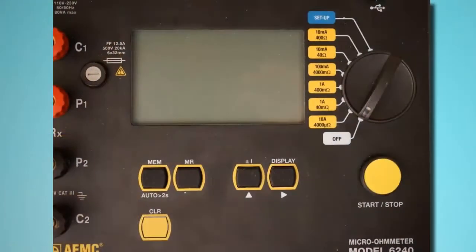Before we begin, let's take a moment to get acquainted with the Model 6240 user interface. Below the LCD are five function buttons.